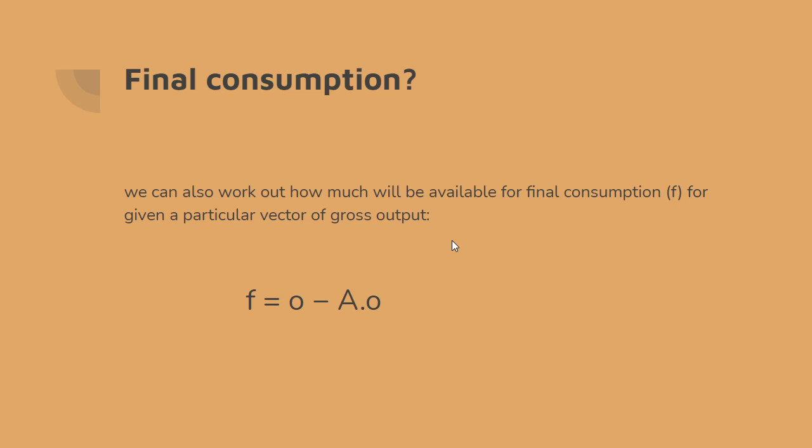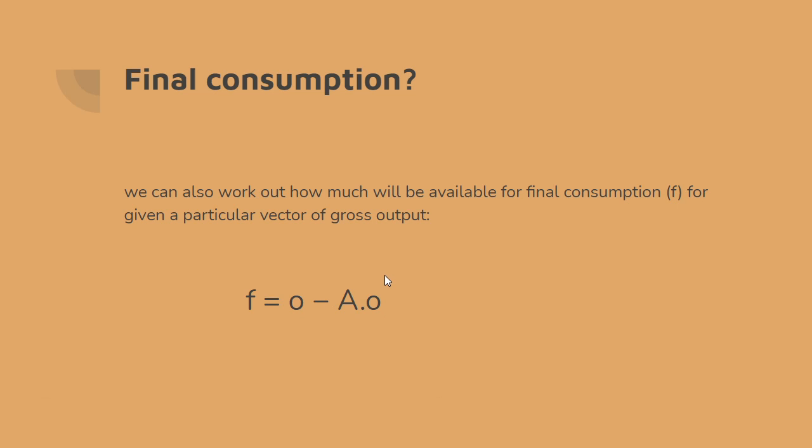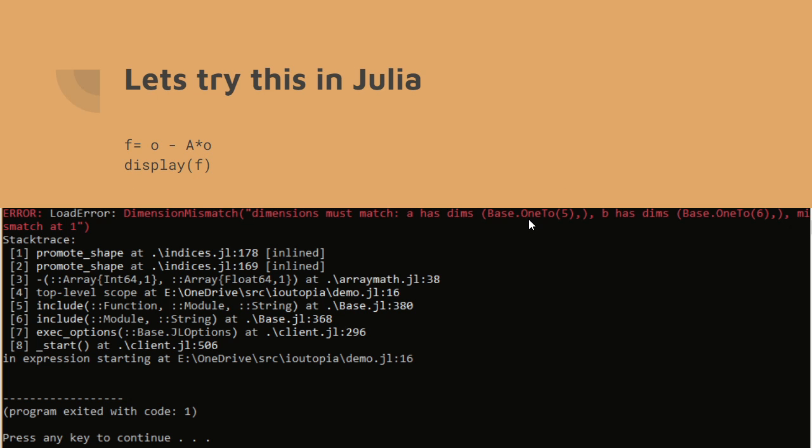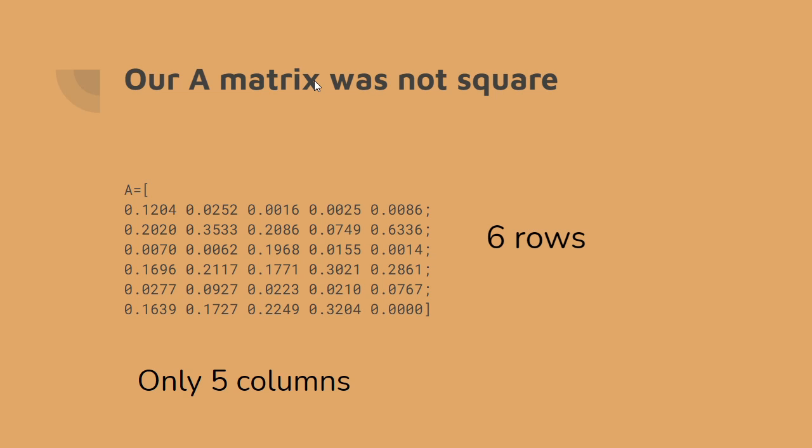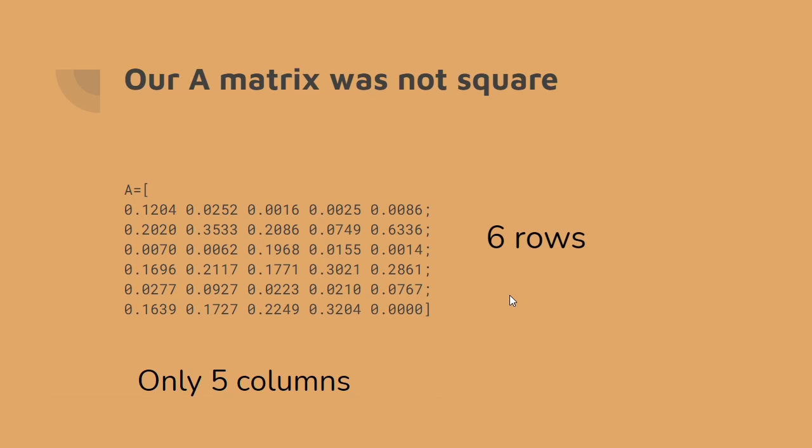You can also go from this to final consumption. Since the final consumption is going to be the output O minus A·O, which is the intermediate products used. So final product is O minus A·O. For Julia, you use the asterisk symbol for multiplication of matrices. If we run this though, we get an error. If we load that in and run it, we get an error. Why have we got this error? What's wrong? The problem is that the A matrix wasn't square. It had five columns and six rows.